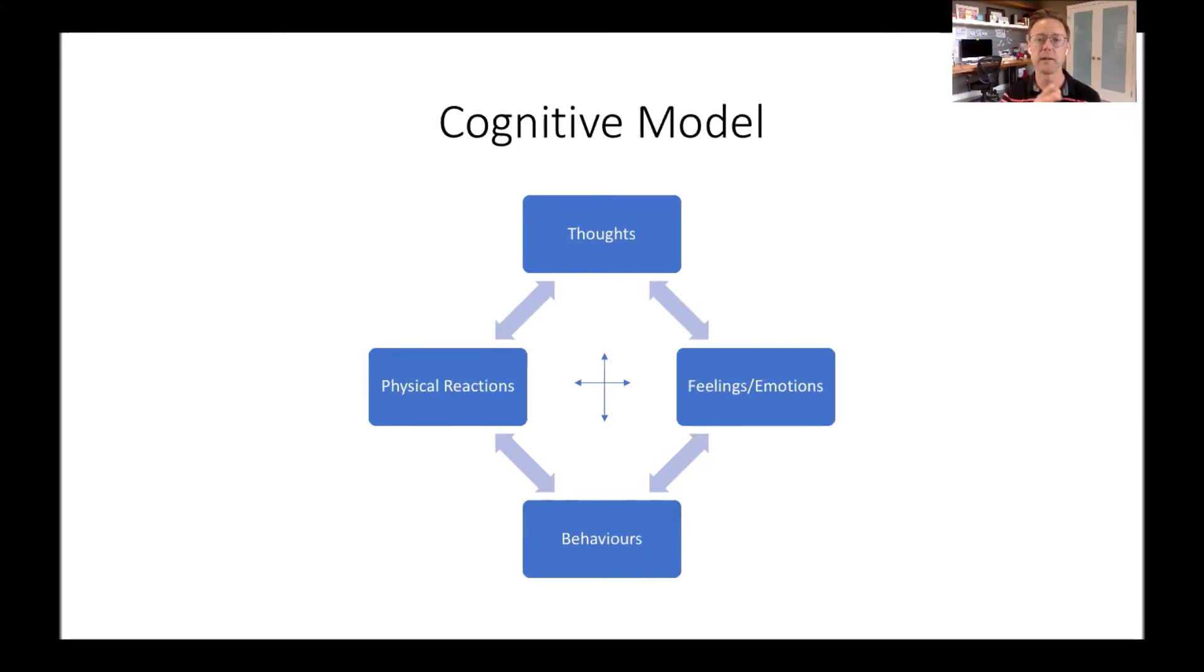And then those thoughts will influence how we feel, what we do, and how our body responds to it. All of the arrows are bi-directional because each thing influences each other. And sometimes it may not start with a thought, but in the cognitive model it very often does. And so that's often where we'll begin.